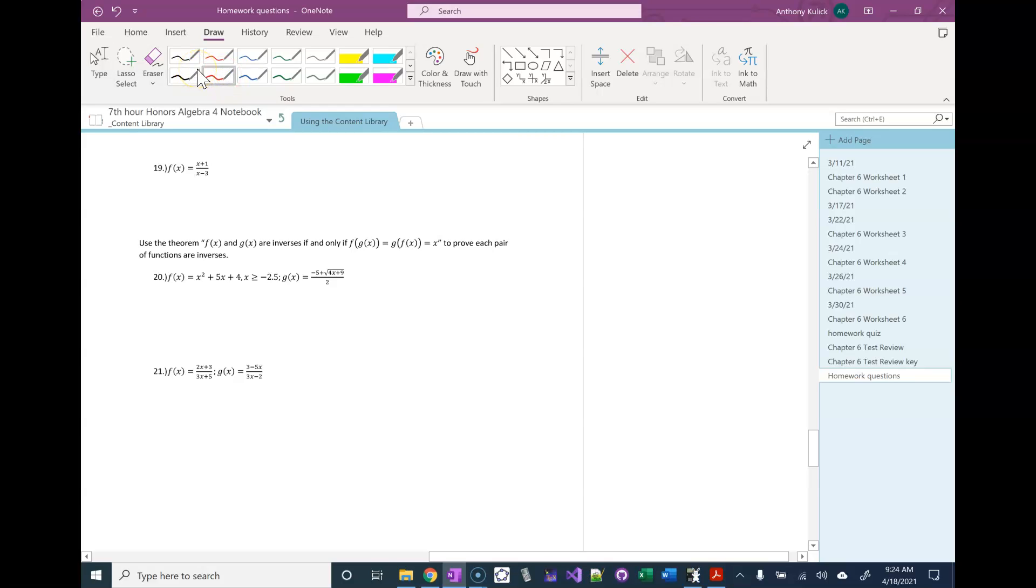This is the chapter view for chapter 6, number 20. So again, we're asked to use the theorem f of g of x equals g of x, f of x equals x, if and only if f and g are inverses, to prove these two things are inverses.